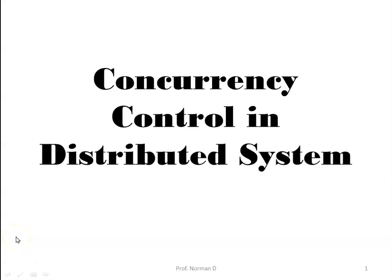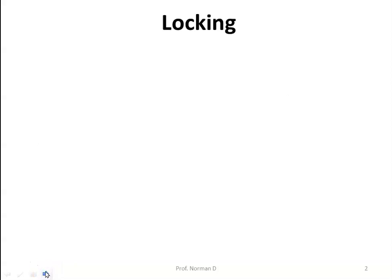In this session we will discuss concurrency control in distributed systems. When multiple transactions are executing simultaneously on different processes, some kind of mechanism is needed to keep them out of each other's way, and that mechanism is called concurrency control. We start our discussion by trying to understand what locking is.